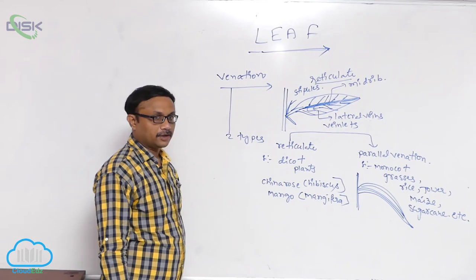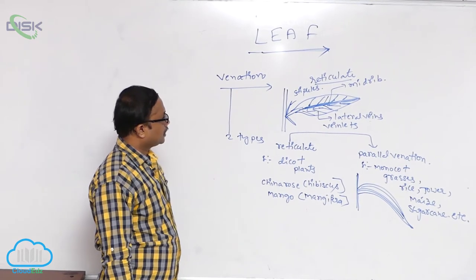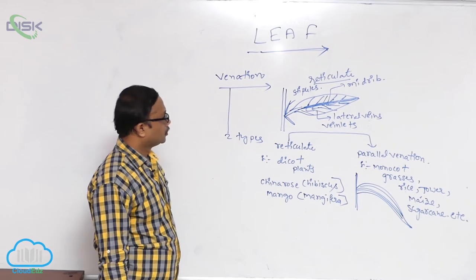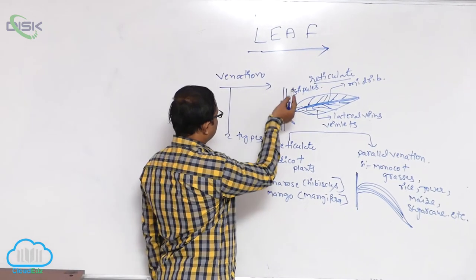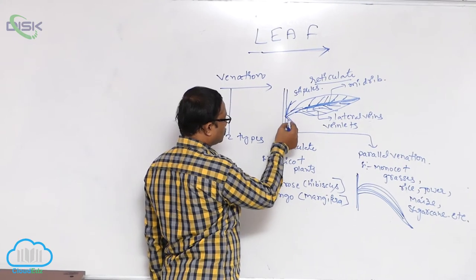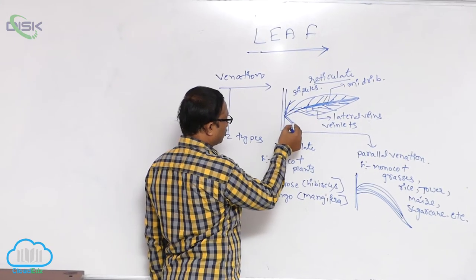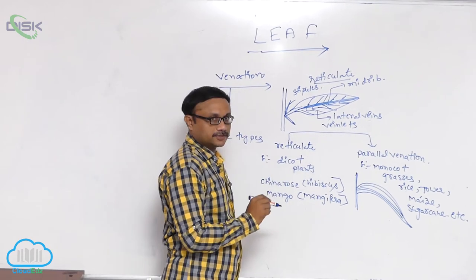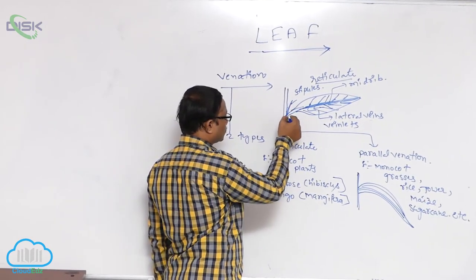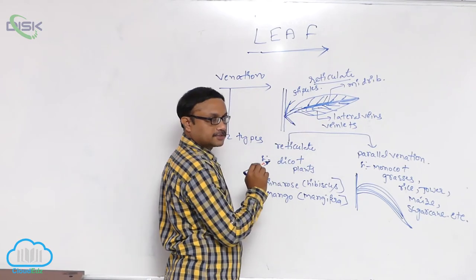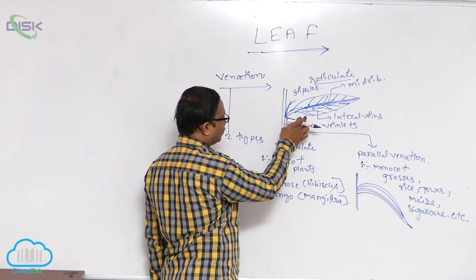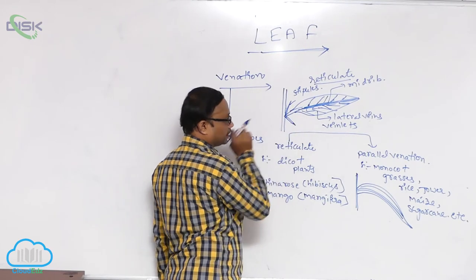The arrangement of veins and veinlets in the lamina is known as venation. Generally, in the leaf, at the leaf base on both sides, small leaf-like structures are present — they are known as stipules. The arrangement of veins and veinlets in the lamina is known as venation.